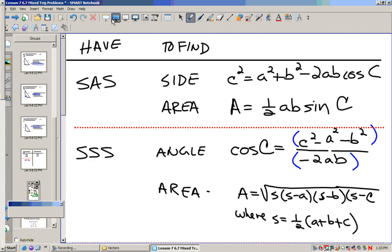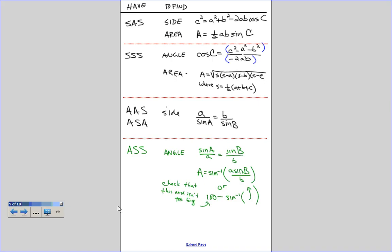Now here is a way we can look at this. If it's side-angle-side, and we want to find a side, we can use this formula, which is the law of cosines. If we want to find the area, we can use this formula, area equals one-half AB sine C. If it's a side-side-side situation, and we want to find an angle, we can use the law of cosines. Cosine C equals C squared minus A squared minus B squared, all over negative 2 AB, which is just this equation solved for cosine of C.